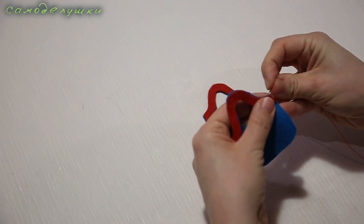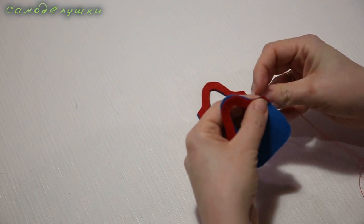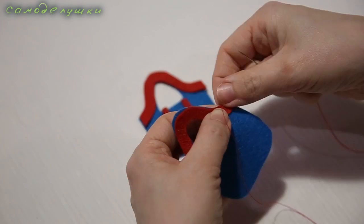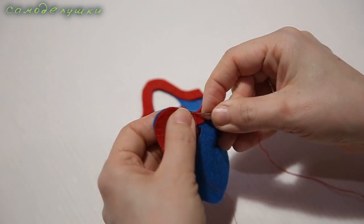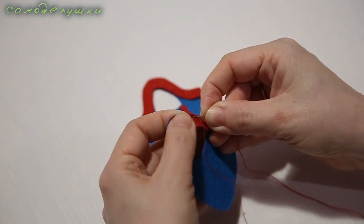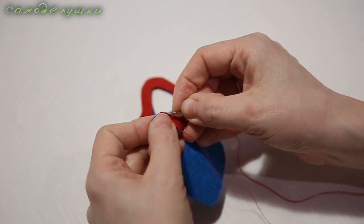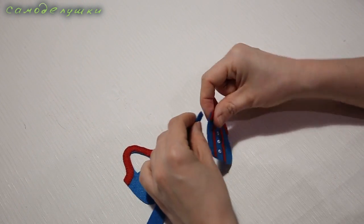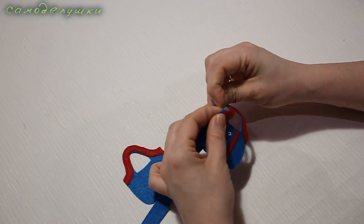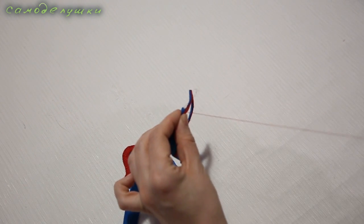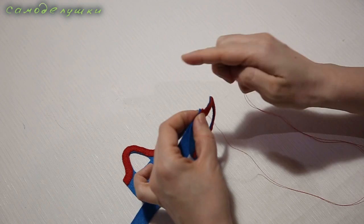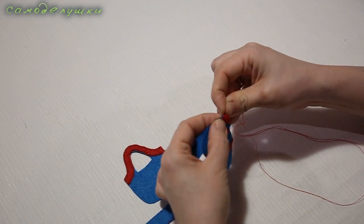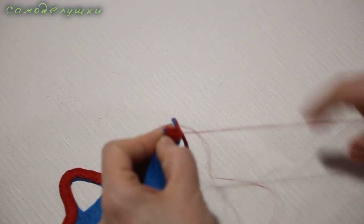I'll sew by hand with small stitches. This is what the sewn elements look like. Now we sew the middle part. We make sure the knot stays inside the work. In the same way with small stitches, we begin to sew.